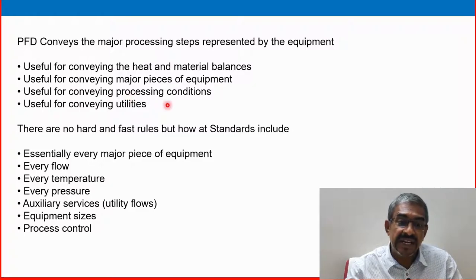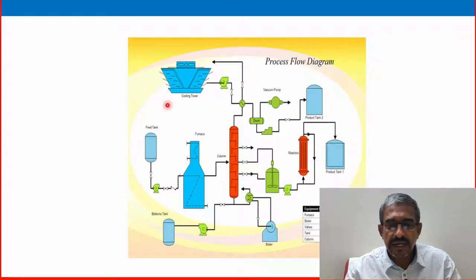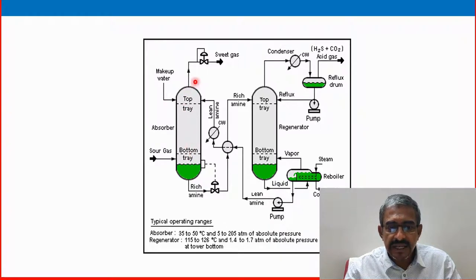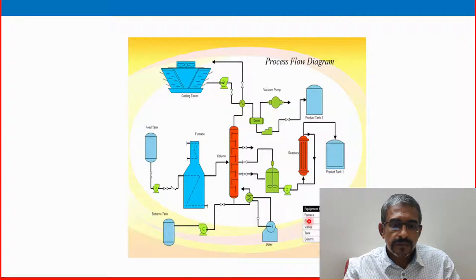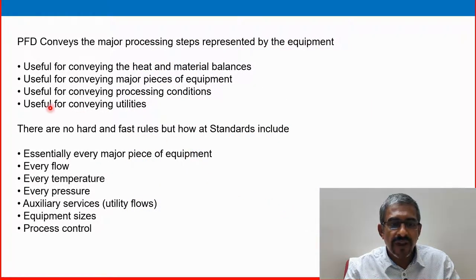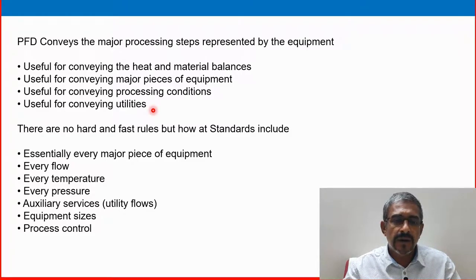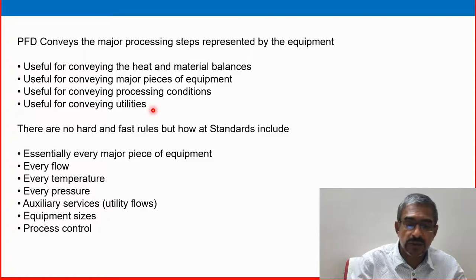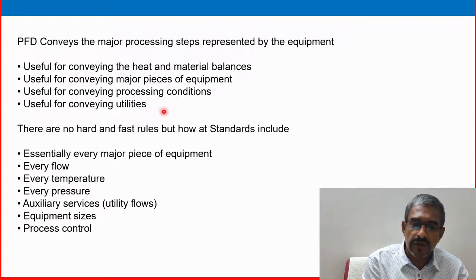Useful for conveying processing conditions also. They will give how processing condition. Here it is absorber and here it is regenerator. Process condition what is happening one by one they will give, how it is going and what is happening, reactions also, some chemical reaction also they will give. Useful for conveying utilities. Sometimes they will give water supply line, instrumentation air, air supply, instrument air supply line, steam supply line, nitrogen supply line also. That is the utility line also they will provide.